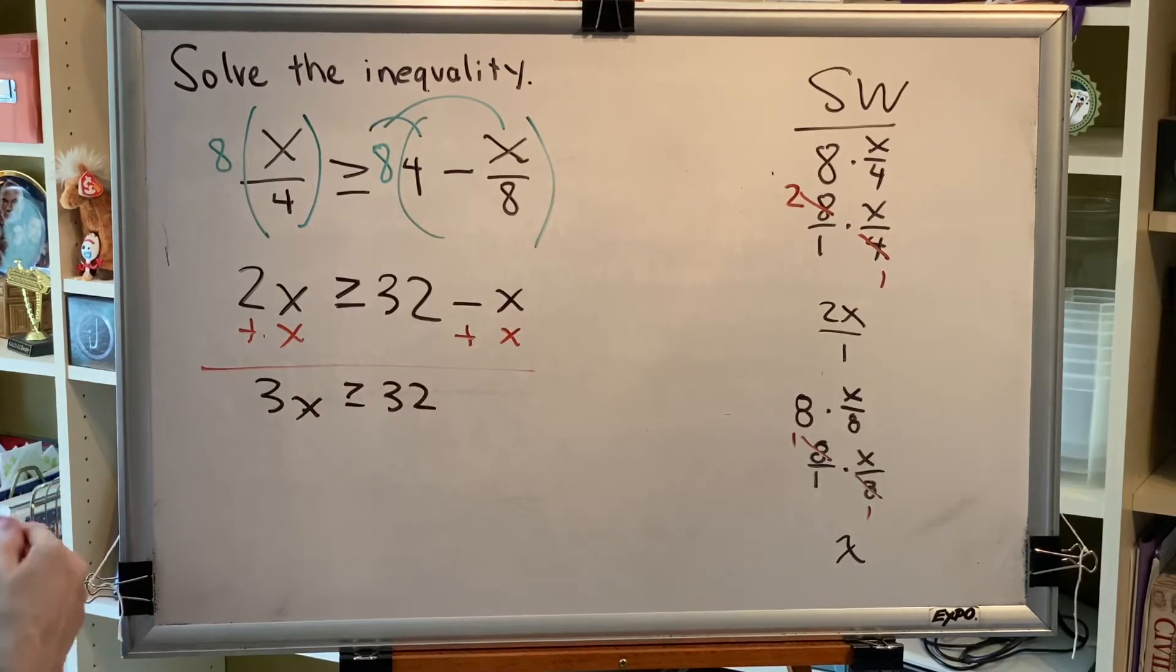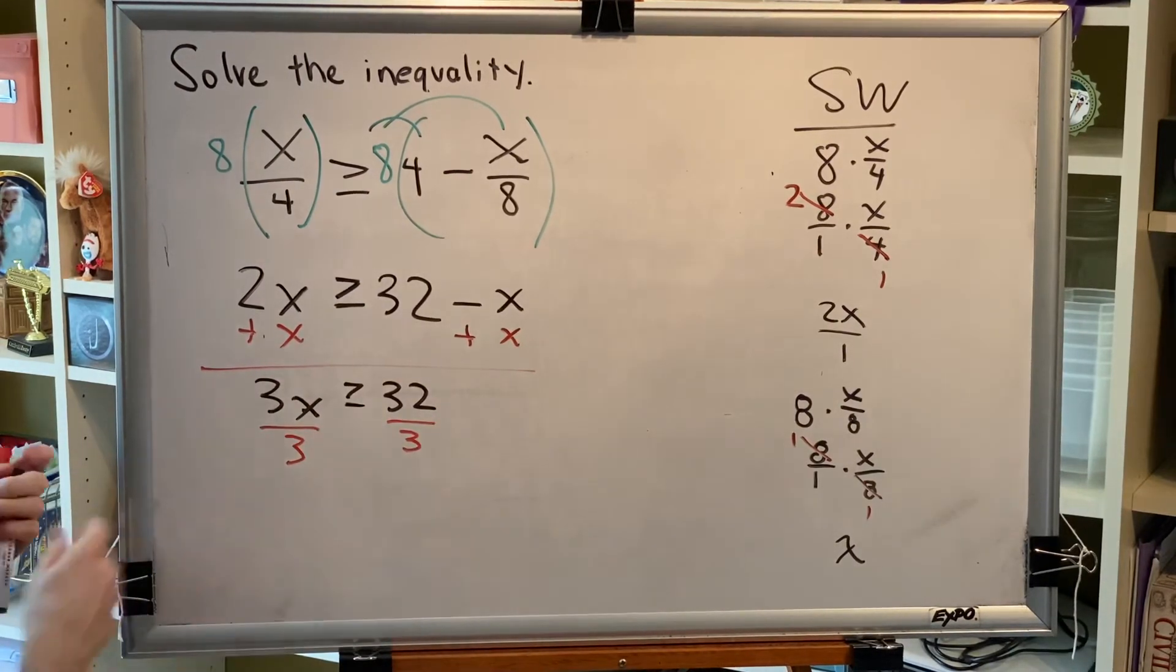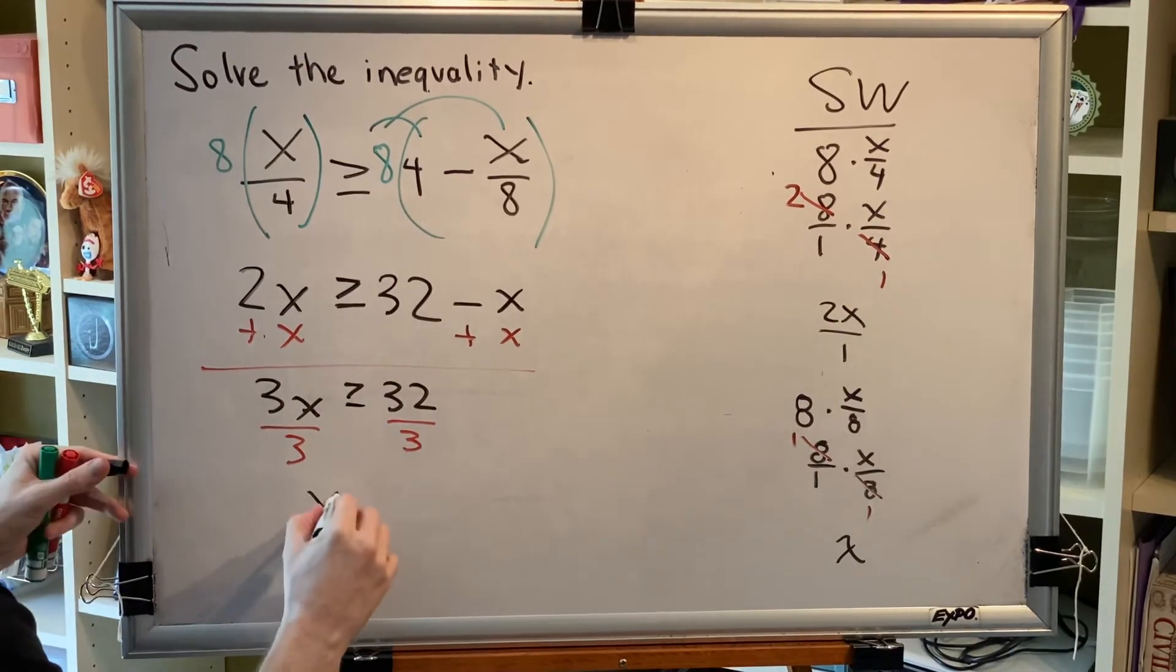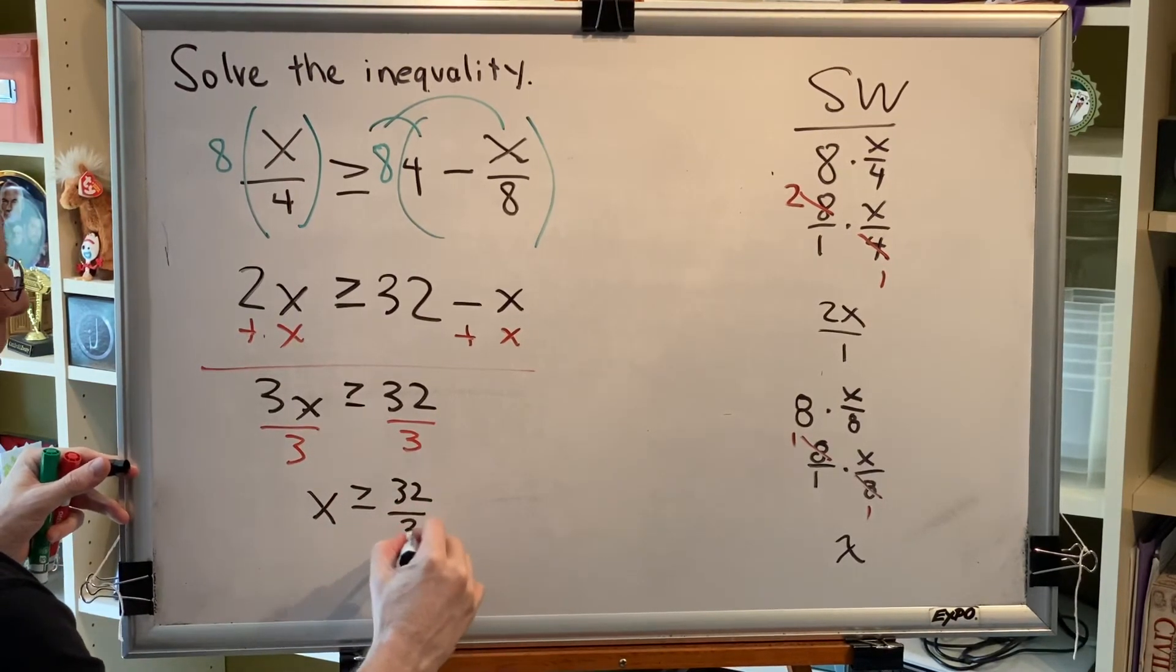Divide both sides by the positive quantity 3. And remember that for a positive, you do not swap the sign of your inequality symbol. And we get x is greater than or equal to 32 thirds.